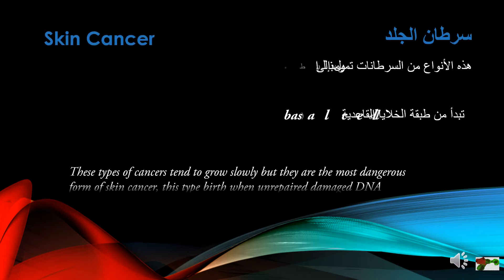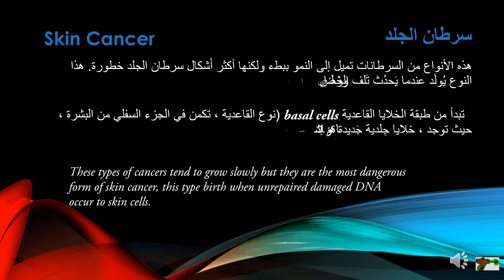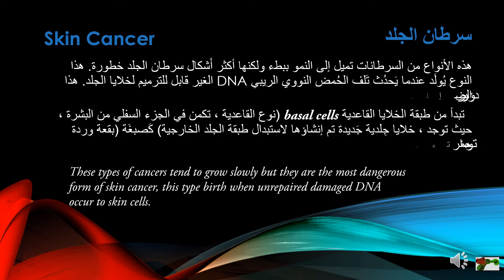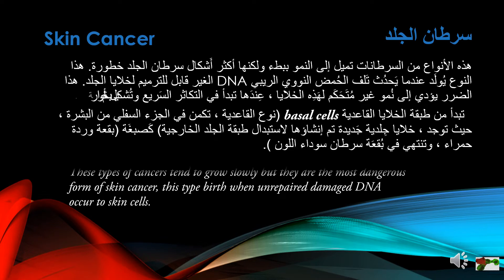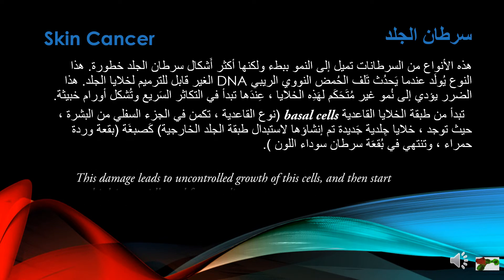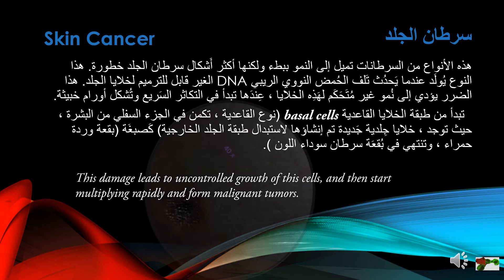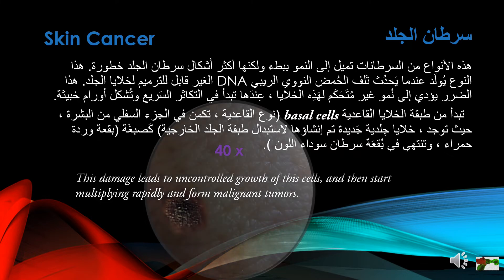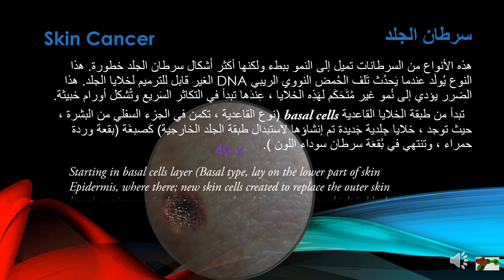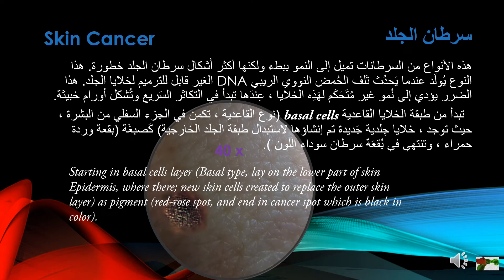These types of cancers tend to grow slowly but are the most dangerous form of skin cancer. This type begins when unrepaired damaged DNA occurs in skin cells, leading to uncontrolled growth, rapid multiplication, and formation of malignant tumors. Starting in the basal cell layer — basal cells lie on the lower part of the skin epidermis where new skin cells are created to replace the outer skin layer as pigment, ending in cancer spots which are black in color.